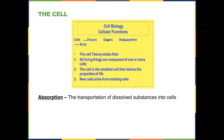The key word that separates absorption from other intake processes is 'dissolved substances.' Another function of the cell is digestion — once substances have been taken into the cell, many times they have to be broken down in ways that allow them to be used in various functions within the cell.